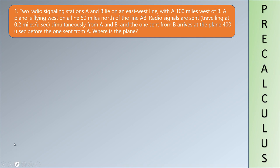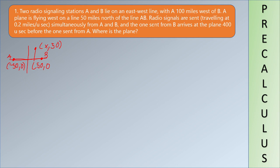We're going to visualize our problem on the coordinate plane. Station A is at negative 50, 0 and station B is at 50, 0. This is our line AB. A plane is flying west — so it's going from here to here — somewhere up here. The signal travels at 0.2 miles per second. The plane is 50 miles north, so the y-coordinate is 50, and x is a variable.